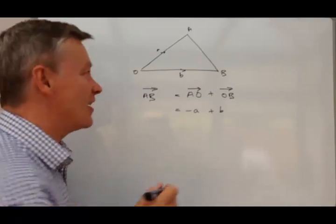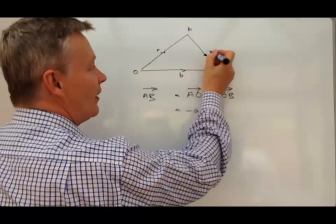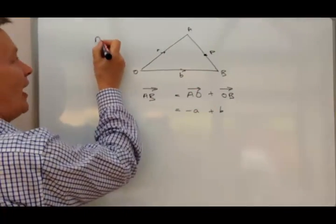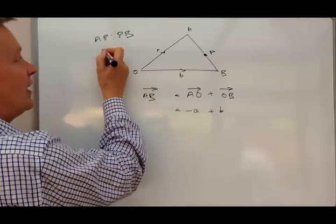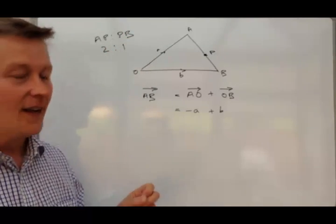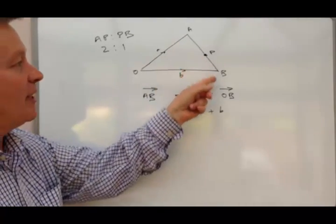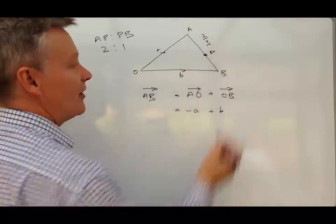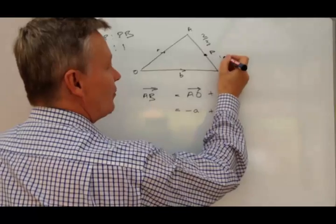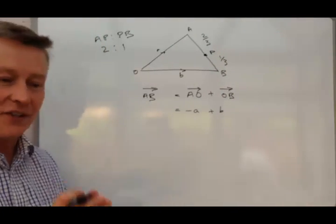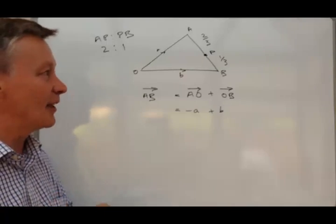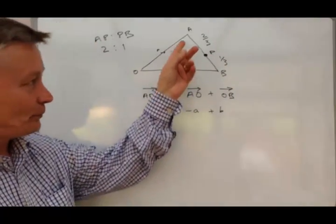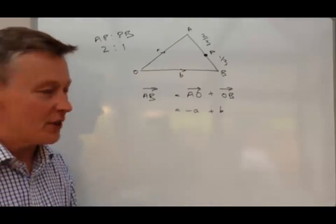This is where it gets a little bit trickier, because what they tell us is there's actually a point P. Now they say that the ratio between AP to PB is two to one. So in other words, the distance between A and P is two thirds, and the distance between P and B is one third. Now I appreciate I've probably not drawn that particularly well, but that's the point of some of these questions, they tend to draw them in such a way as to make it a little bit trickier.